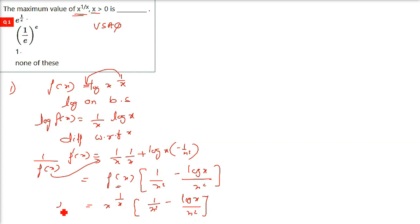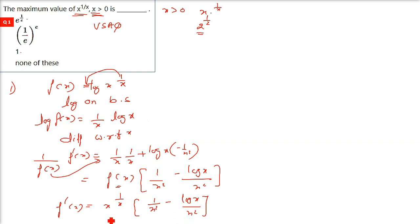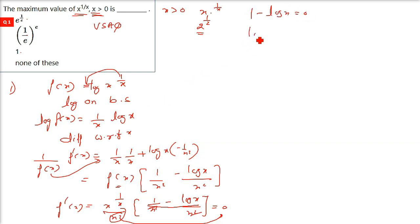Now, x greater than 0 is clearly given in this question. For maxima/minima we equate the differentiation to 0. We have (1 minus log x) divided by x squared, multiplied by x raised to 1 by x, equals 0. Since x is greater than 0, both x^(1/x) and x squared cannot be 0, so only the numerator matters.